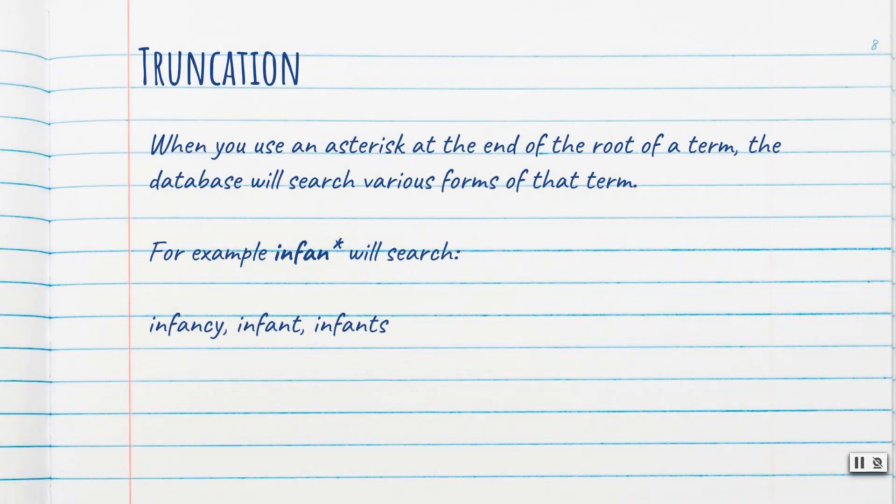Another advanced search technique is truncation. This is when you use the asterisk at the end of a word — you search the root of a term and the database will search various forms of that term. For example, 'infant*' with the asterisk will search infancy, infant, or infants.